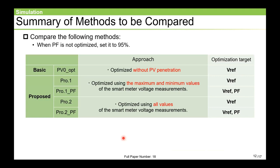This slide summarizes the methods used for comparison. We determined the parameters with five different methods. The first one, PV0opt, is used to compare with the proposed method, which optimized Vref without PV systems. And PRO1 and PRO1_PF use the minimum and maximum voltage values of the smart meter measurements, while PRO2 and PRO2_PF use all voltage measurements. Also, in PV0opt, PRO1 and PRO2, only Vref is optimized and the power factor is set to 95%.